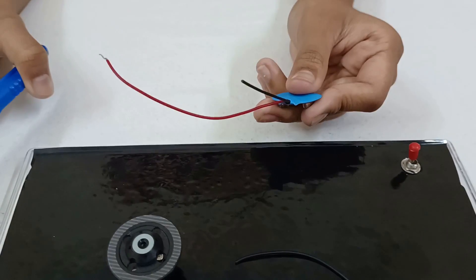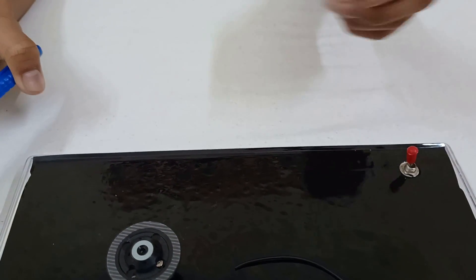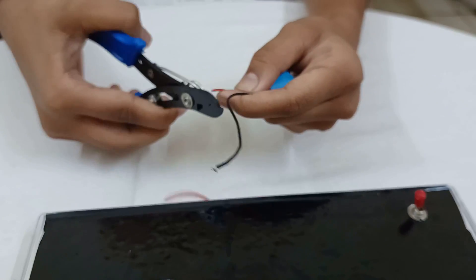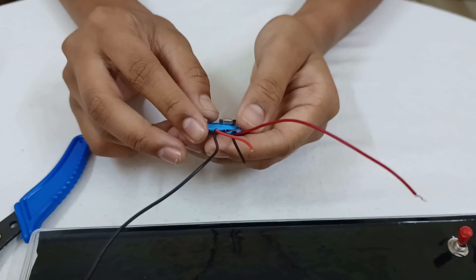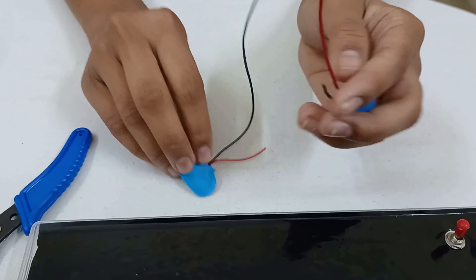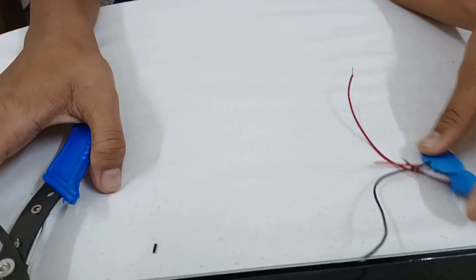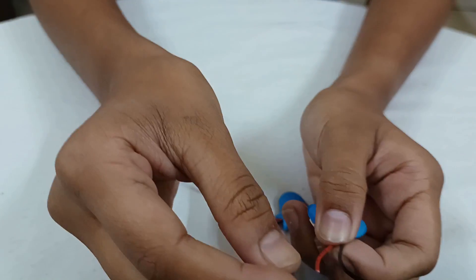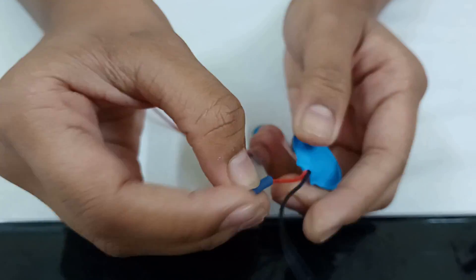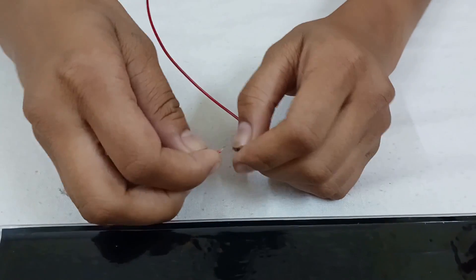First battery cap black wire and second battery cap red wire. Now strip both wires. Put insulation on the wire. And now join both wires.